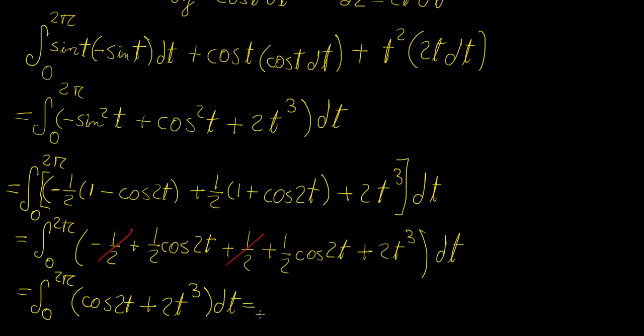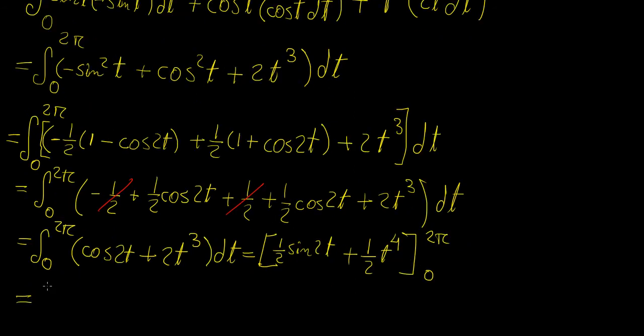So we're going to get cosine of 2t plus 2t cubed dt. And now we integrate that. This one is going to become sine, so half of sine 2t. This one is going to be plus t to the power of 4 over 4, so that's going to cancel out. We're going to have half of t to the power of 4, from 0 to 2π. And we can probably take out that half, so we're going to have half of this: sine 2t plus t to the power of 4, from 2π to 0.